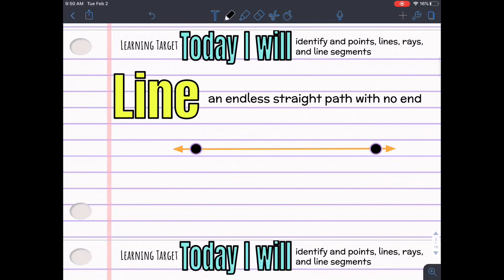Next, we have a line. A line is an endless straight path with no end. So, you can see there's points here. Let's say it's point A and point B. These points mark each arrow in a sense.